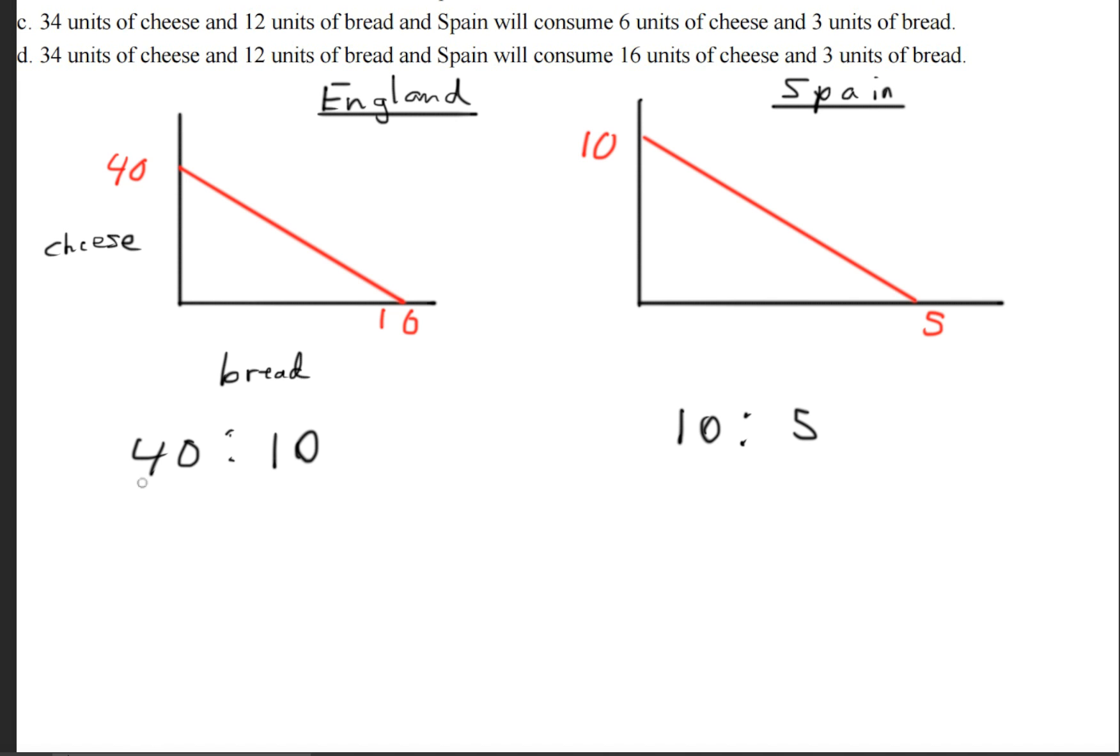To do this, we divide by 40 on both sides. This gives us 1 and this will give us 0.25. We do the same process over here. We divide by 10. This gives us 1, this gives us 0.5.